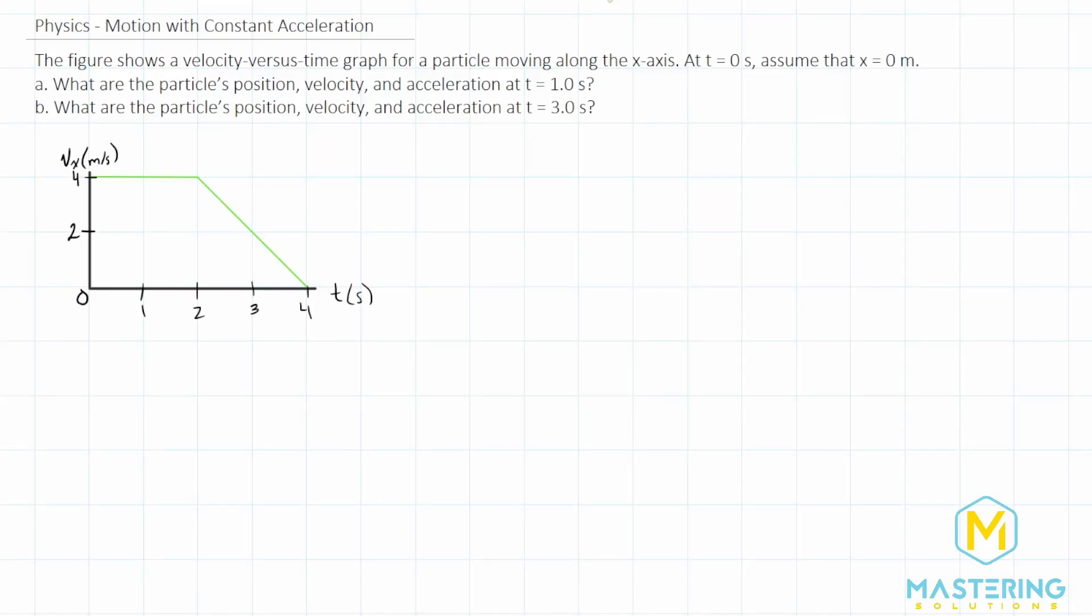Welcome to Mastering Solutions. In this acceleration problem, they give us a velocity versus a time graph, and then they want us to figure out for two different times, one second and three seconds, the position, velocity, and acceleration for both of those.